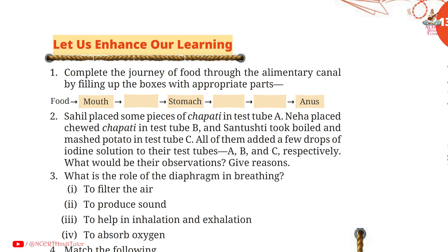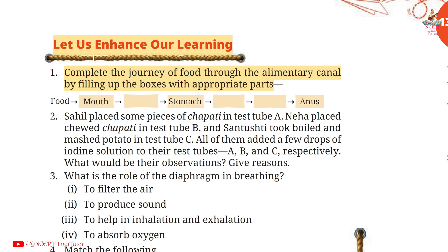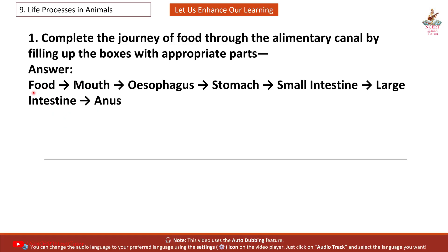Question 1: Complete the journey of food through the alimentary canal by filling up the boxes with appropriate parts. Answer: First food, then mouth, then oesophagus, stomach, small intestine, large intestine, anus.